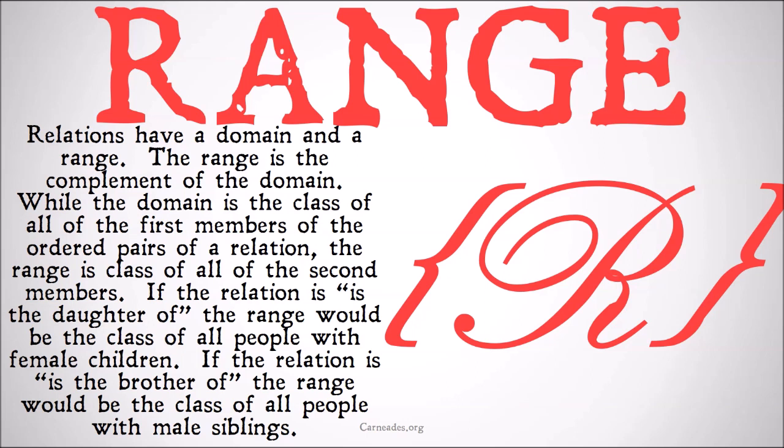The domain is the class of all of the first members of the ordered pairs of a relation. The range is the class of all of the second members of the ordered pairs of a relation. If the relation is 'is the daughter of', the range would be the class of all people with female children. Note that it's not the class of all daughters — that's the domain. The range is the class of people who have themselves daughters.